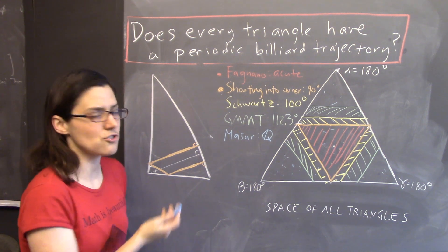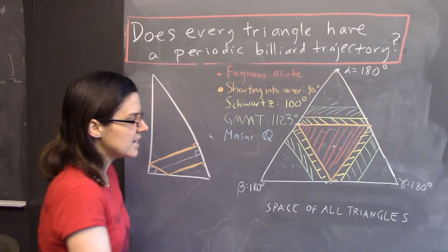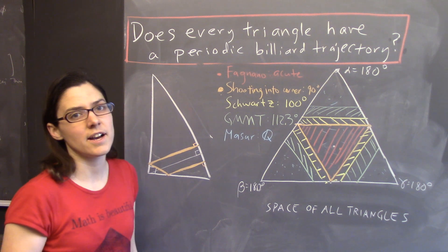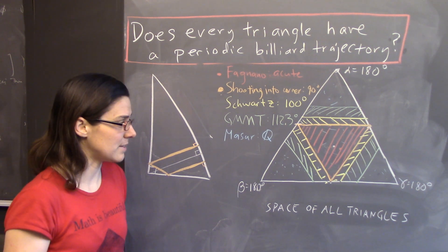So, if you randomly chose a triangle, it wouldn't have rational angles. But on the other hand, very, very nearby, there would be a triangle with rational angles that we know has a periodic billiard trajectory, and in fact, infinitely many.